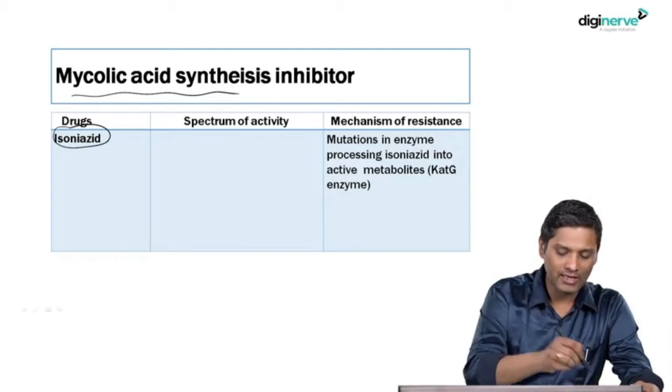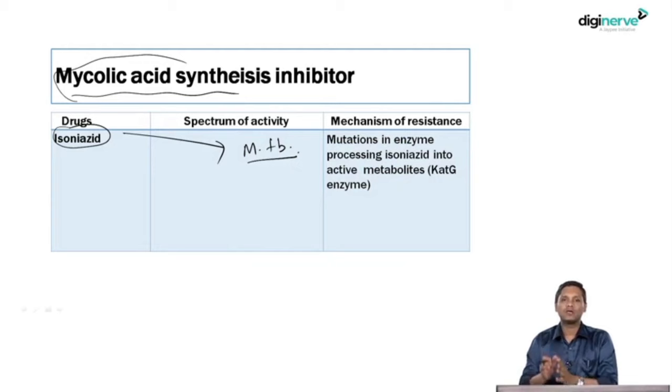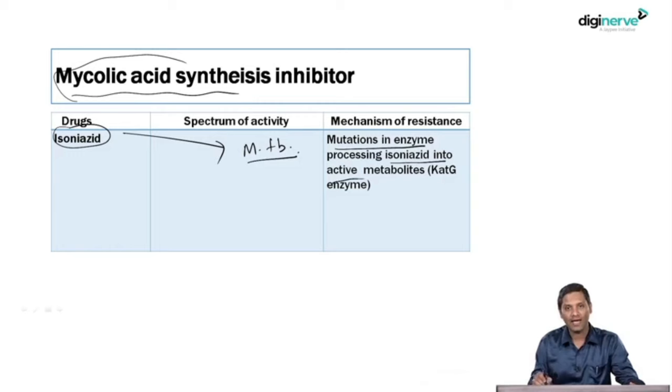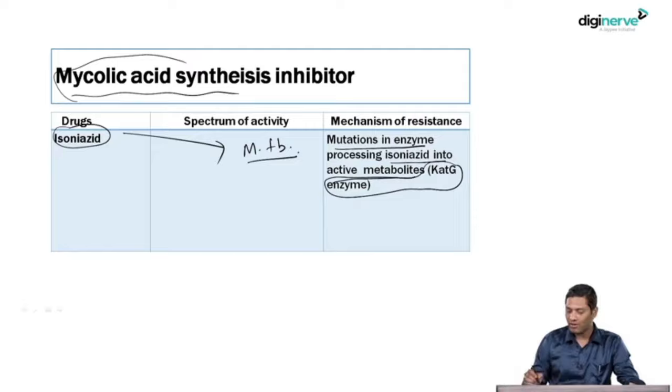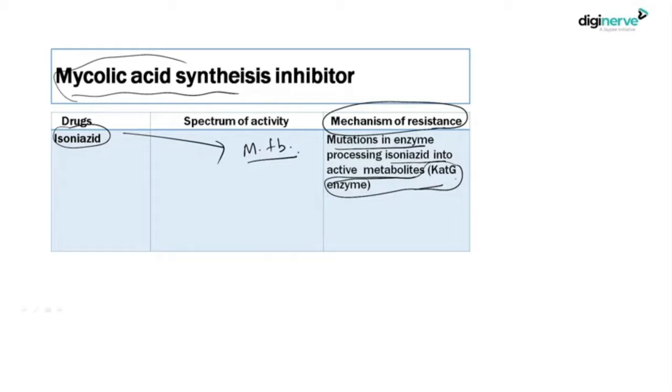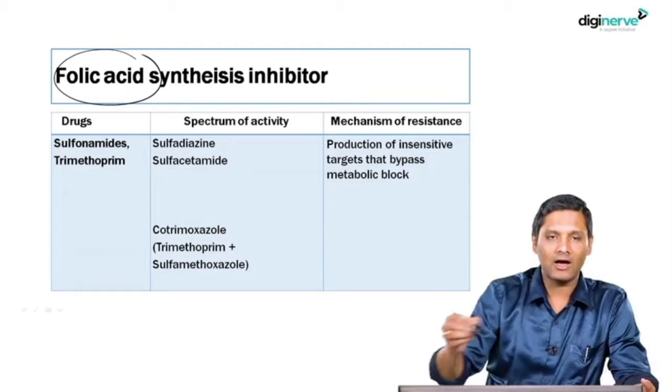The mycolic acid synthesis inhibitor — classical example isoniazid — is one of the most active drugs for Mycobacterium tuberculosis, given along with rifampicin. Isoniazid acts by inhibiting mycolic acid synthesis, which is part of the cell wall of M. tuberculosis. The principal mechanism of resistance is mutation in the katG enzyme, which is responsible for converting isoniazid into its active compound.